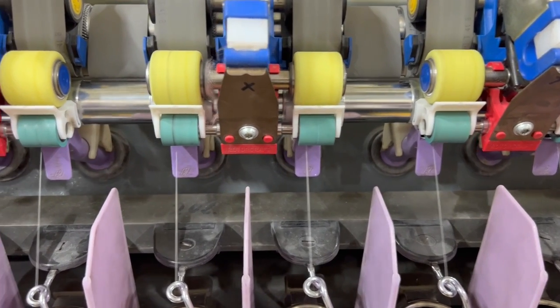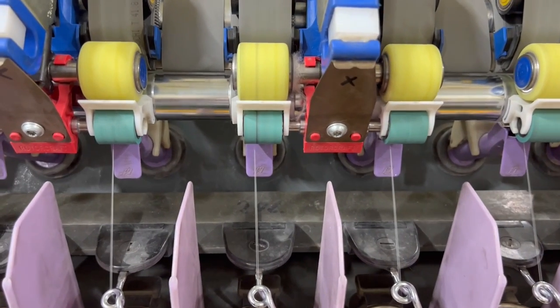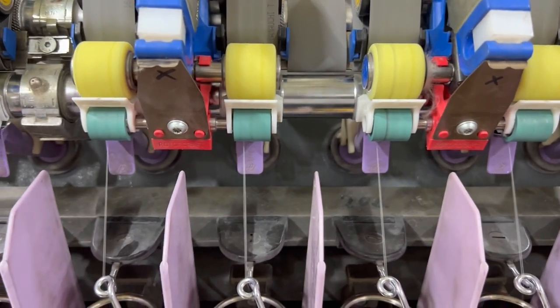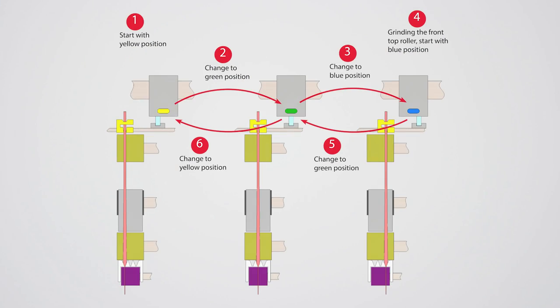This amounts to 18mm total usage of the cots and aprons, more than with any other device. This is the principle of controlled traversing.